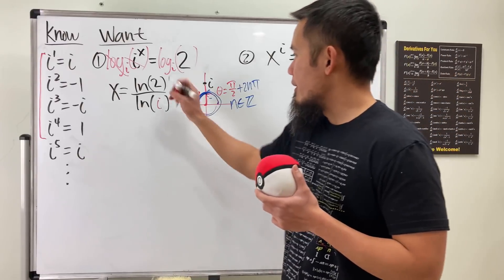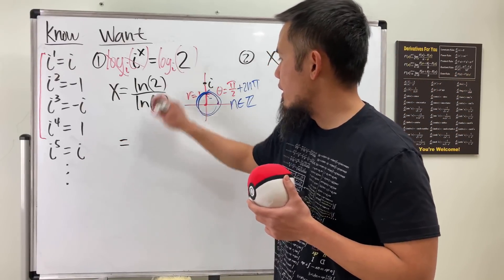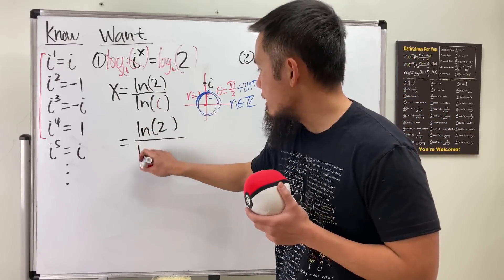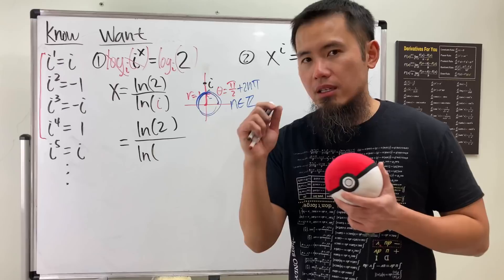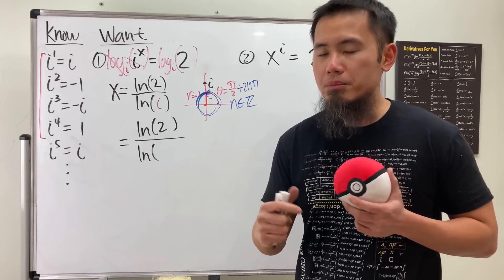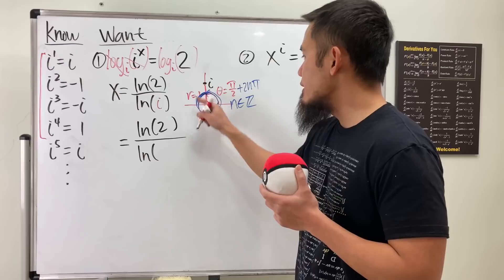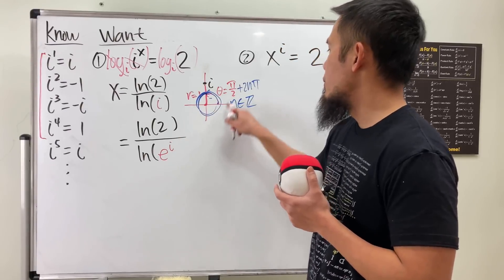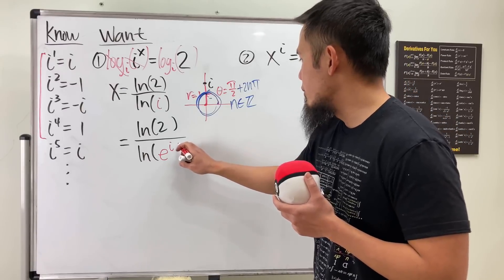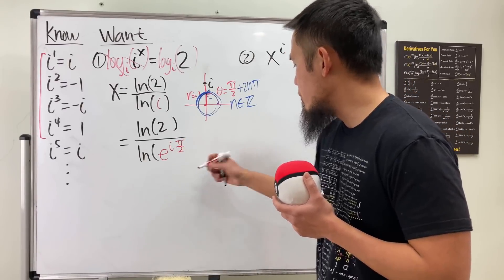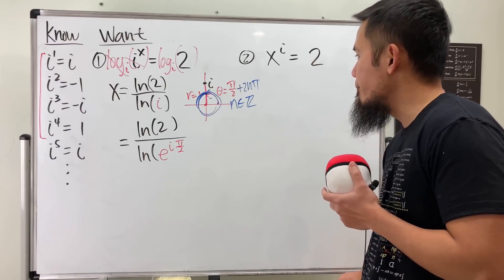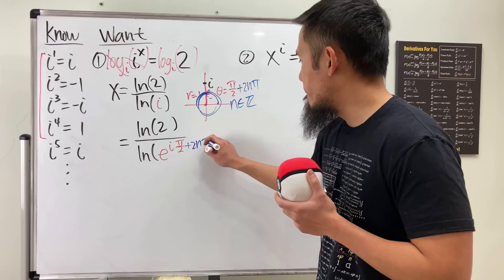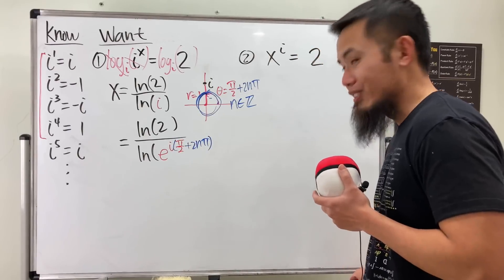So now, here is the deal. Here we have ln(2) on the top, and on the bottom, we have ln, and the i is our e^(iθ) form. That's the polar form for it. r is 1, so we just have e, and then iθ, which is actually just this. So I'm going to put it down as π over 2, but I will have to add it with 2nπ, like this, if you want to have all the answers.